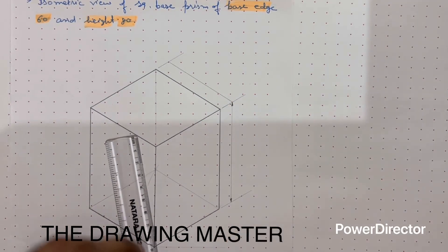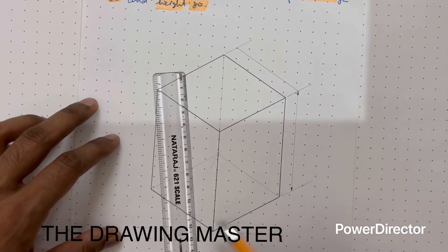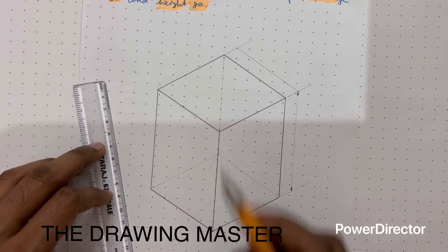You can see here only three lines are there, three isometric lines are there. 30 degrees towards right, 30 degrees towards left and vertical line.